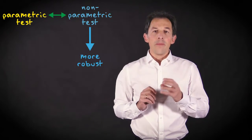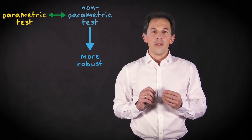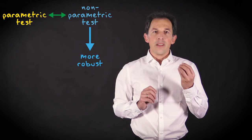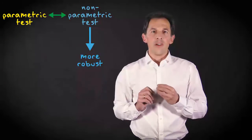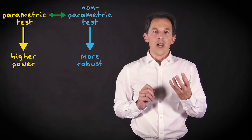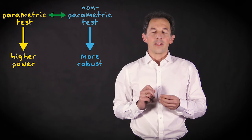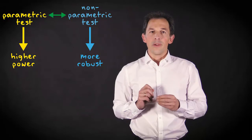In general, a non-parametric method is more robust than its parametric equivalent. Robustness means that when assumptions are violated, it doesn't heavily influence the outcome of the test. However, the power of a parametric test is always higher than an equivalent non-parametric test. And therefore, if there is a choice and assumptions are met, a parametric test is preferred.